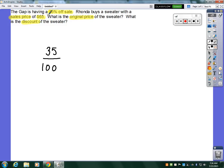The Gap is having a 35% off sale. So 35 is actually representing the discount you're going to receive. 100 is the total or what would be the original price.